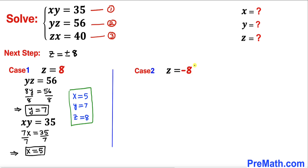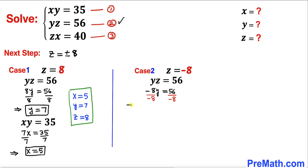Now let's consider case 2, when z equals negative 8. Using equation 2 and plugging in z equals negative 8, we get negative 8y equals 56. Dividing both sides by negative 8, our y value turns out to be negative 7.